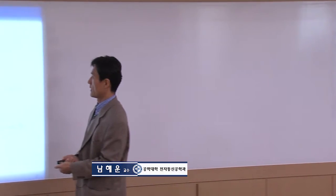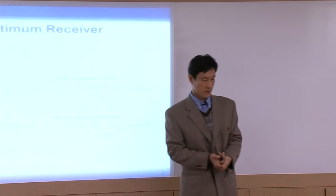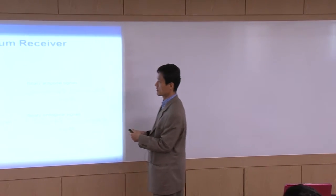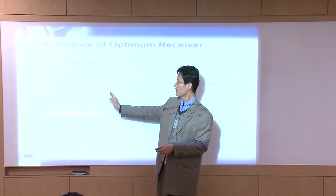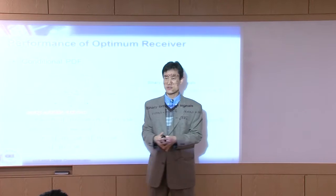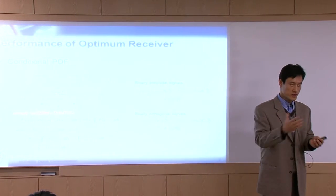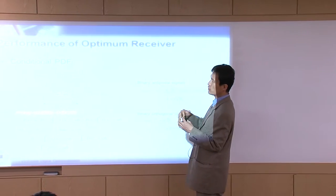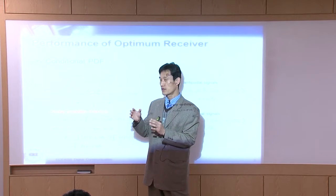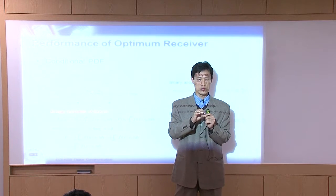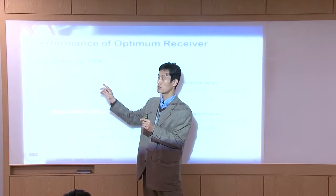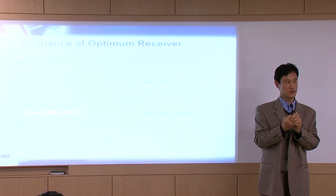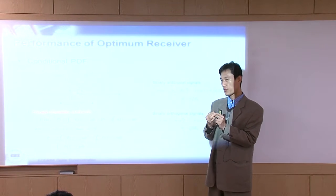Last week, what we learned is binary transmission. We have S1 and S2 — those are symbols. Originally we start from bits, 0 or 1, but when you transmit, after the modulation, bit 0 and 1 will be converted to symbols S1 and S2. There are two modulations we learned: antipodal signaling and orthogonal signaling.